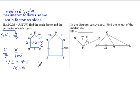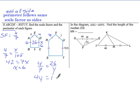Using the scale factor, small to big equals perimeter of small to perimeter of big. So 4 over 7 equals 26 over Y. Cross multiplying gives 4Y equals 182. Dividing both sides by 4 gives 45.5, which is the perimeter of the big shape.